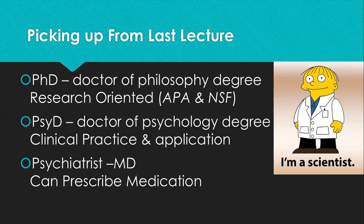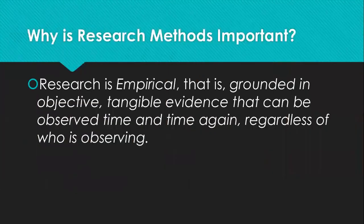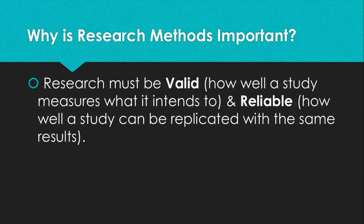There are also those with a psychiatric MD, meaning they achieve both a Psy-D and an MD, so they can practice psychology, psychiatry, and prescribe medication. Those with a PhD doing research must do so in an empirical manner — grounded in objective, tangible evidence that can be seen time and time again regardless of who is observing. Research must be valid, meaning the material has to really measure what it sets out to measure, and reliable, meaning we can replicate it and get consistent results.